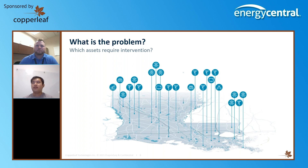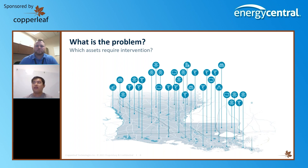As we can see, some utilities and organizations may have a more diverse asset population, and we need to be able to compare where we're spending our money and resources to do those interventions and ensure that our assets are sustained.